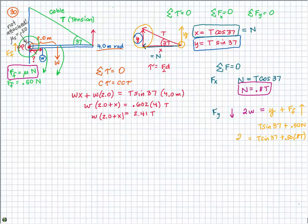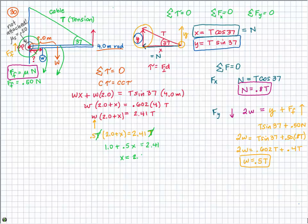On the left side we have 2W. So 2W equals T sine 37 plus 0.4T, which gives 2W equals 0.602T plus 0.4T. Dividing both sides by 2, W equals 0.5T. Plugging 0.5T in for W in the torque equation, the T's cancel and we can solve for x. X turns out to be 2.8 meters.